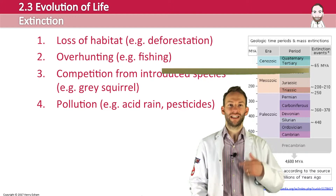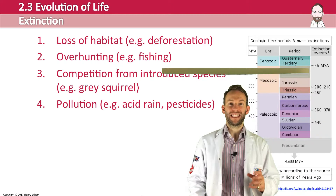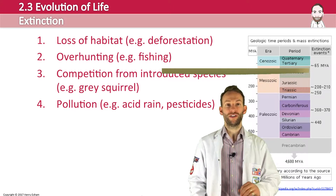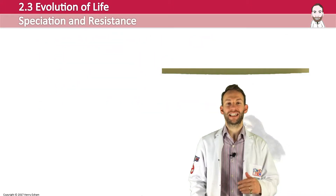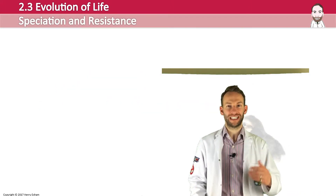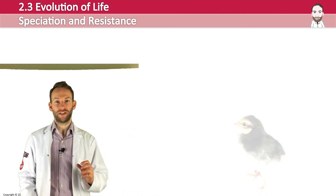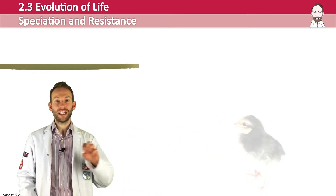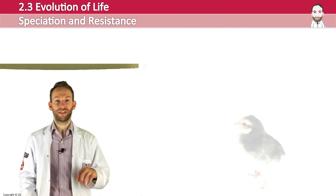Moving back to speciation, which was mentioned in part 1 of evolution — this is the idea of how a new species can be formed. Populations are groups of interbreeding individuals, and within each population you can have little subunits called demes.